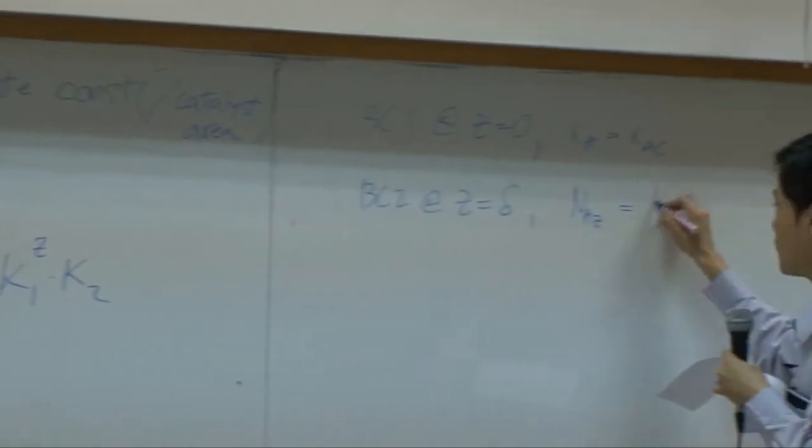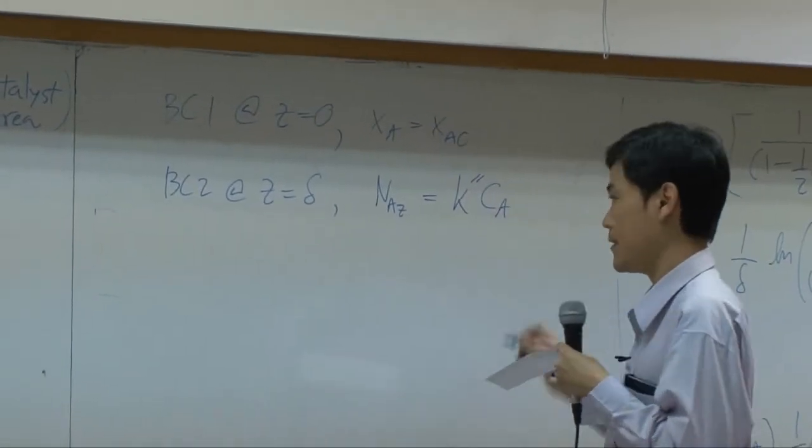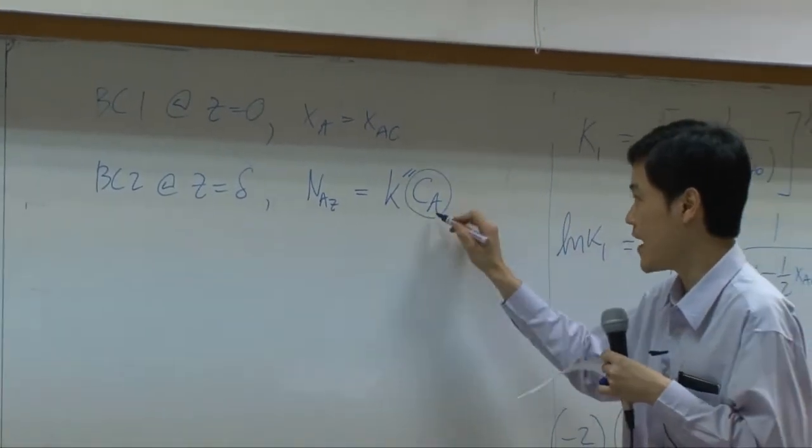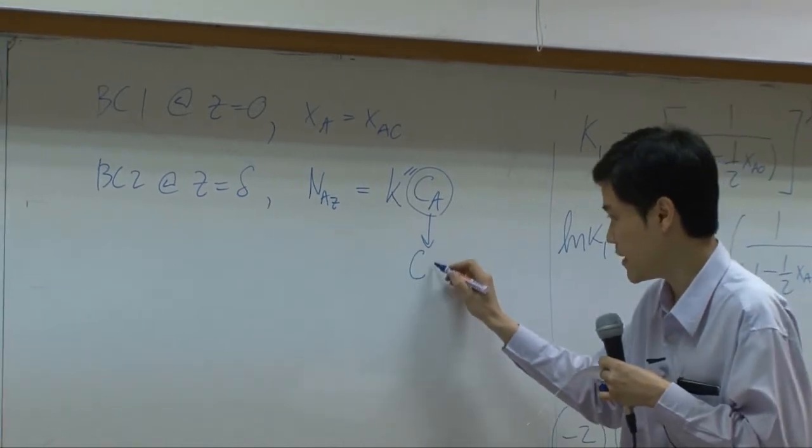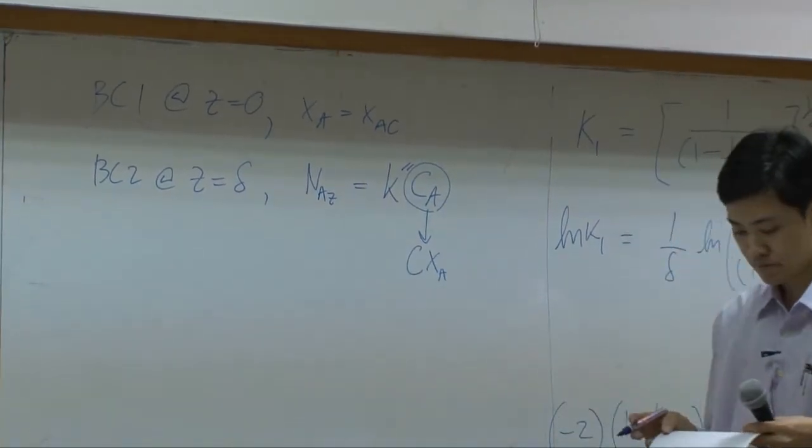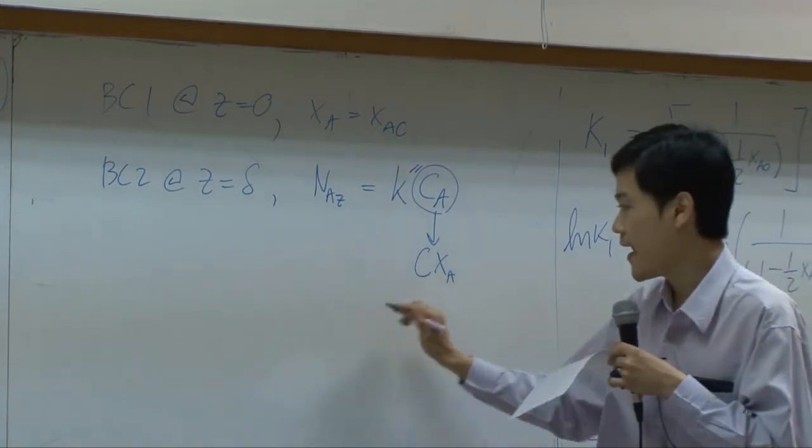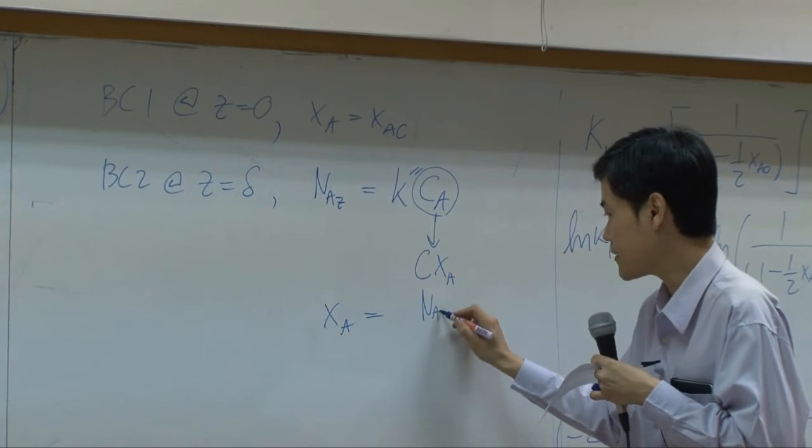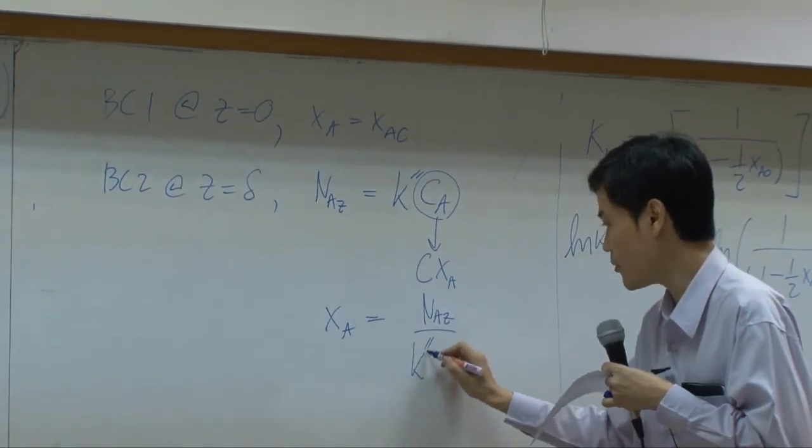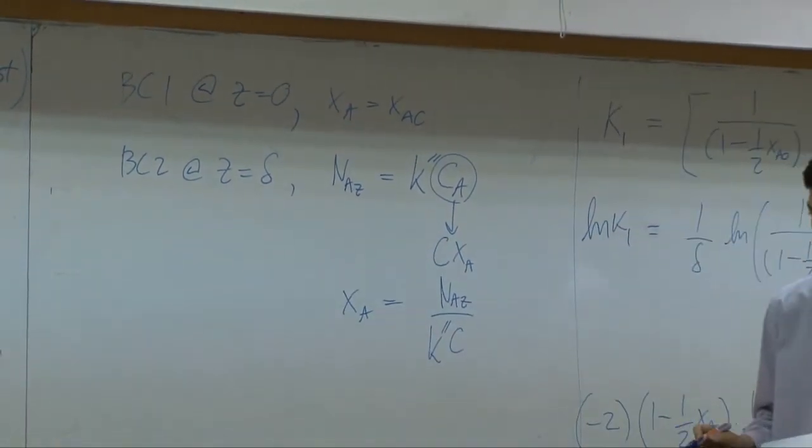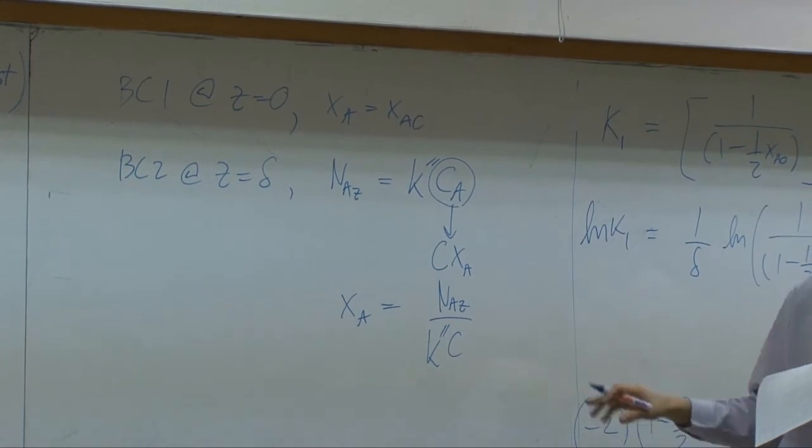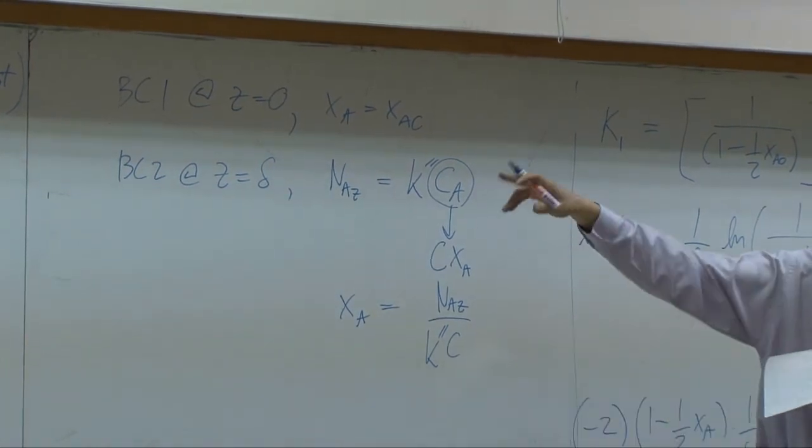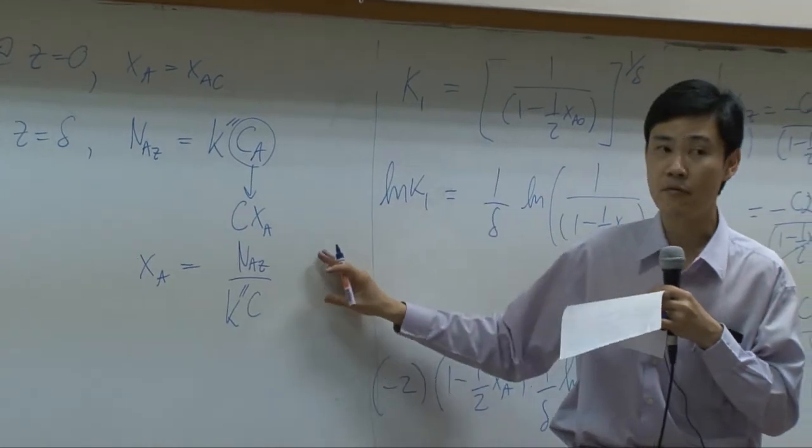Rate equals k double prime ca, and ca equals c times xa. So therefore, xa would be equal to flux divided by k double prime c. Then you can take this back to the equation as the second boundary.